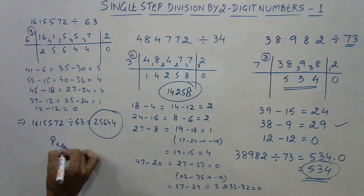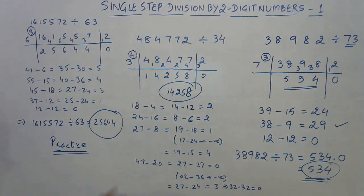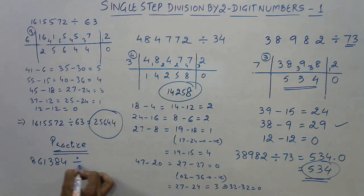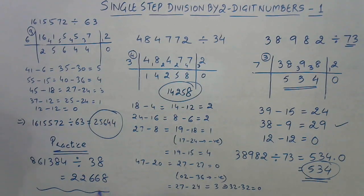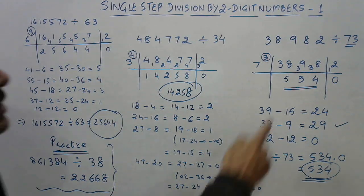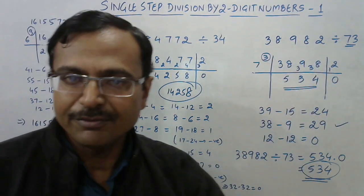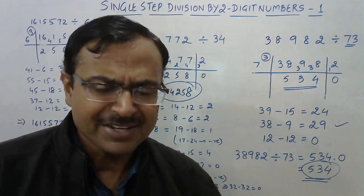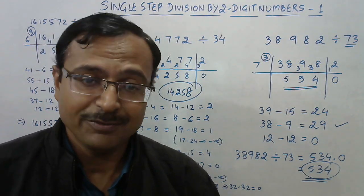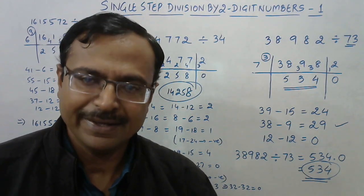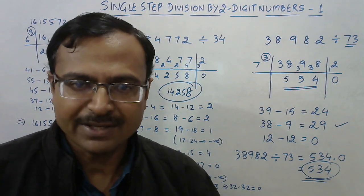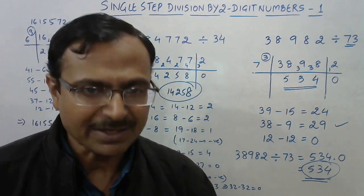You can check your answer using a calculator — I'm sure you'll get the correct answer. Now practice this method. I'll give you a question: try to divide 861384 by 38 and get the answer 22668. This is for you to practice so you can feel comfortable with the method. Then we'll get on with Part 2, which will cover cases where dividing a large number by a two-digit number gives an answer in decimals. Every concept is complicated if you don't practice it, but once you do, these methods act as lifesavers in competitions.